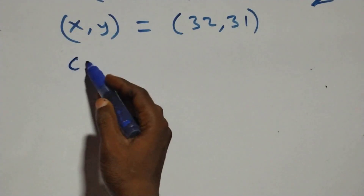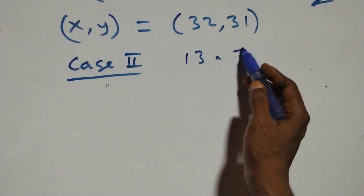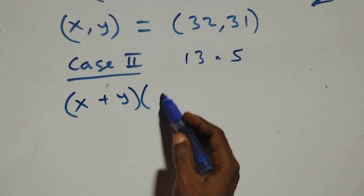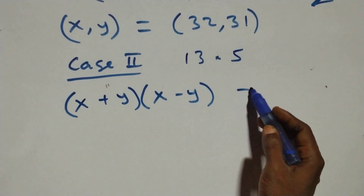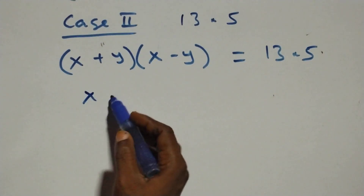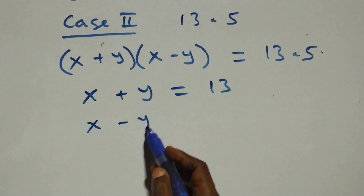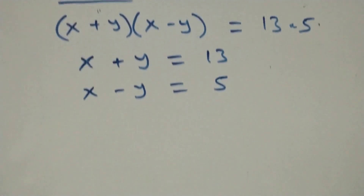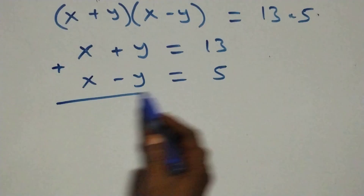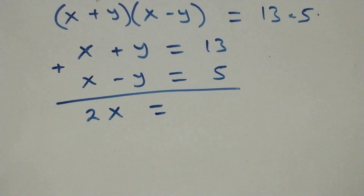Case 2: we have 13 times 5. The equation (x + y)(x - y) = 13 × 5 gives us x + y = 13 and x - y = 5. We add these two equations to eliminate y: x + x gives 2x, y is eliminated, equals 13 plus 5.